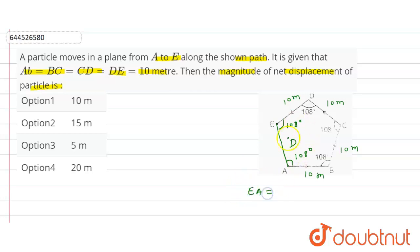So we have to find this EA. So EA is equal to how much? Because this is a regular pentagon, angle is same everywhere, so this EA will be how much? 10 meters. So net displacement is how much? 10 meters. So see here, option first is the correct option. Thank you.